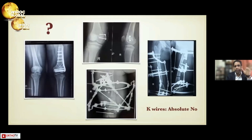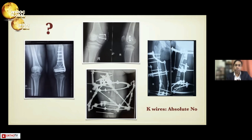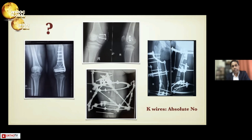We have different options for fixation — either acute correction or gradual correction — using guided growth plates, six-axis correction systems, or the Ilizarov frame. I personally prefer not to use K-wires, as they can lead to many problems. The choice among these options depends on the age and degree of deformity.